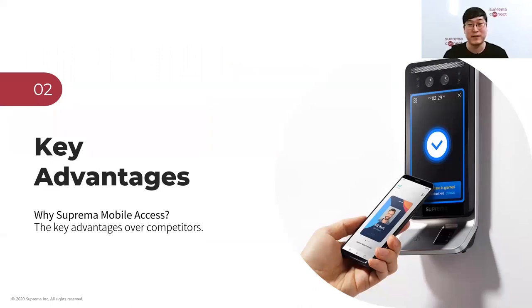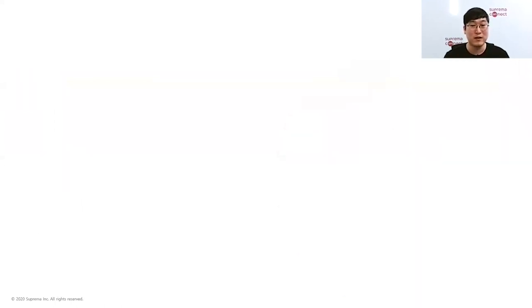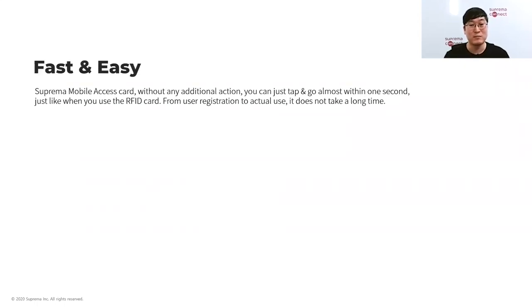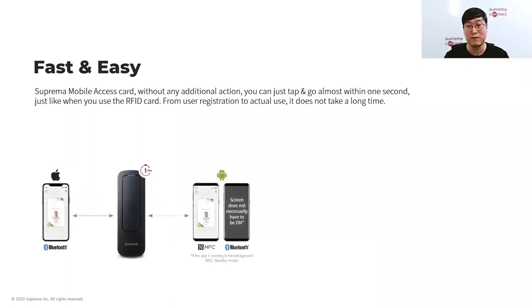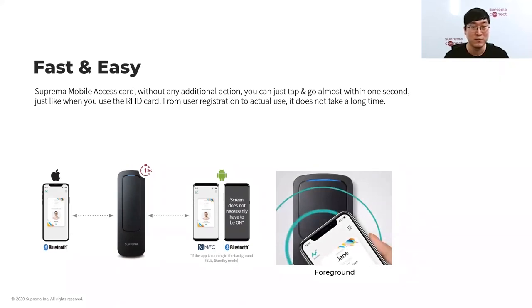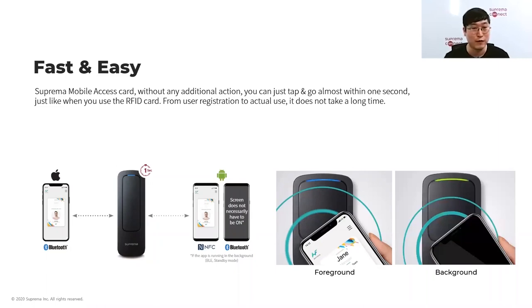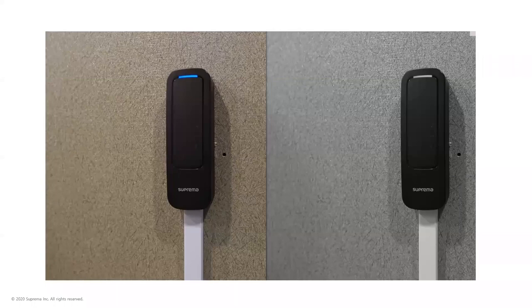Now, the key advantages of our mobile solution. Our solution is fast and easy. Our ultimate goal is providing the same speed as plastic cards but with better usability. The combination of Suprema's own Bluetooth signal processing technology and our readers' high performance provides almost the same speed as RFID cards. You do not need any additional actions like twisting, tapping, or touching the screen. Just place your mobile phone near the reader and go — just like a plastic card. Here is a demo video showing how easy it is.